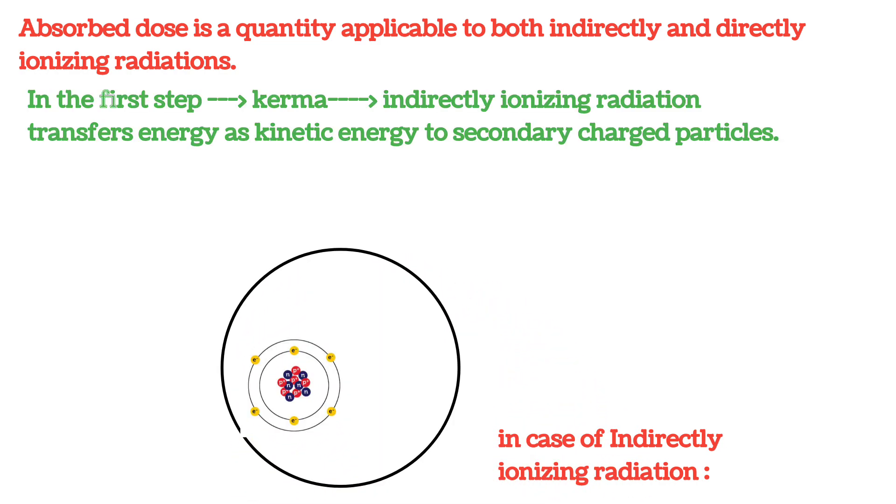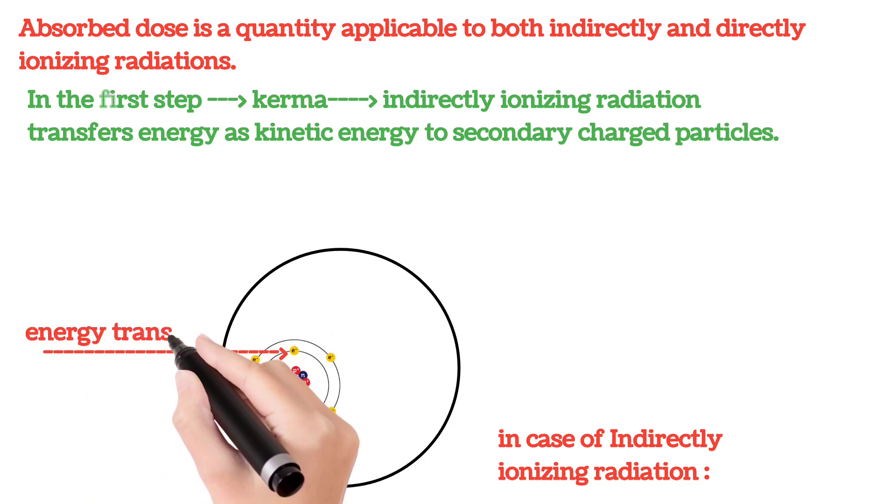In the first step resulting in kerma, the indirectly ionizing radiation like x-ray or gamma radiation, when passing through the medium, first transfers their energy as kinetic energy to secondary charged particles.